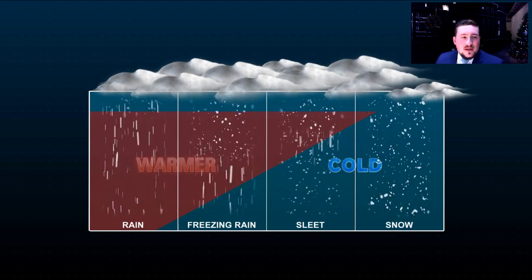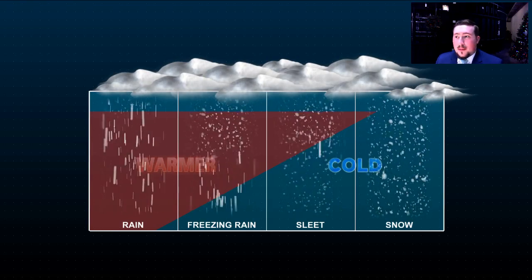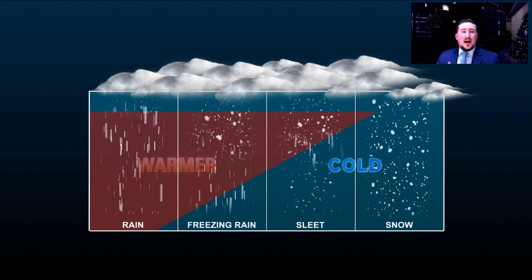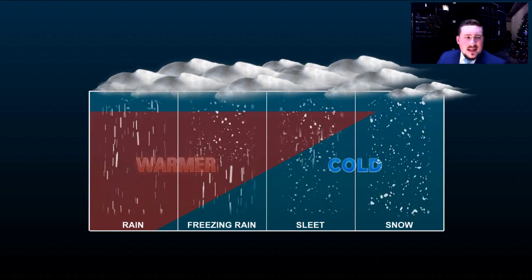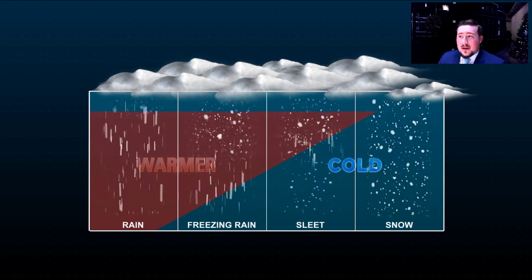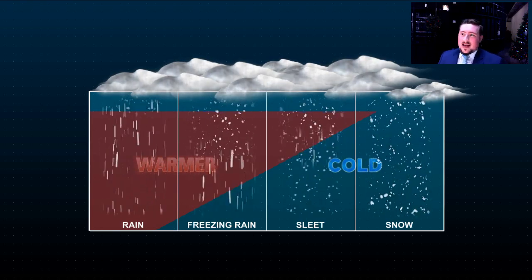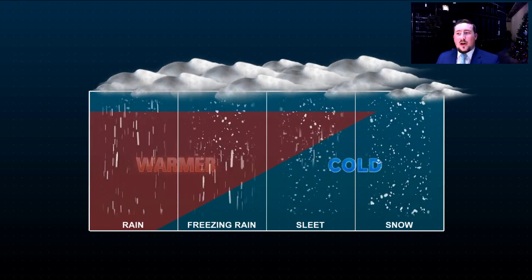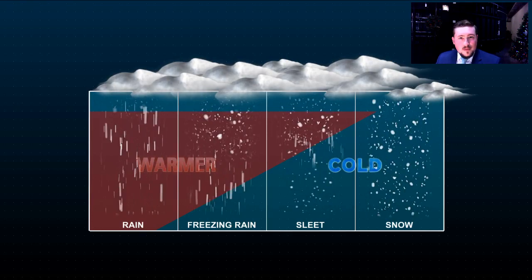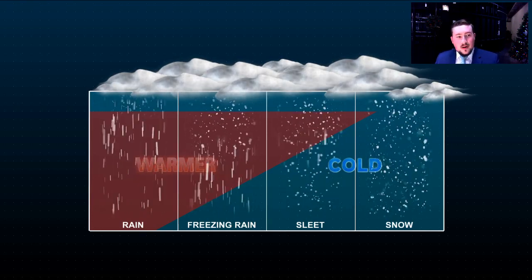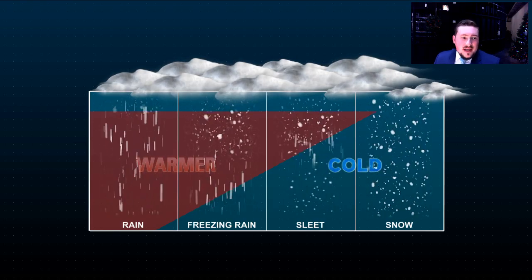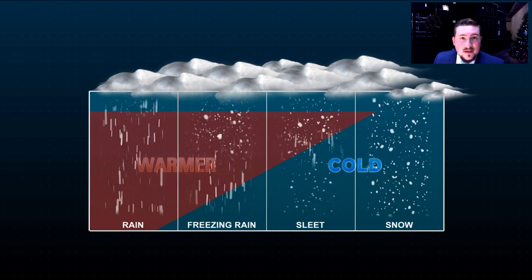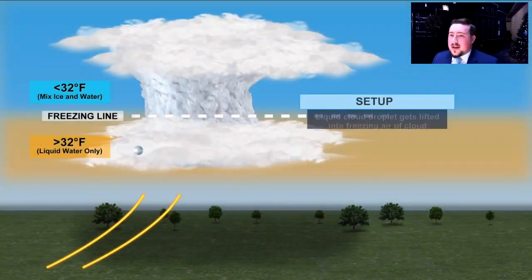Now we're going to talk about graupel as well. It's going to have a very similar temperature profile to sleet, but the process behind it is a little bit different. Instead of the low stratus clouds you see in the image here, we're going to be talking about taller types of clouds with more vertical motion within them — that's what causes graupel and hail. They're all somewhat related, but the processes and outcomes are different enough that they're called different things.